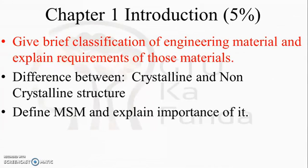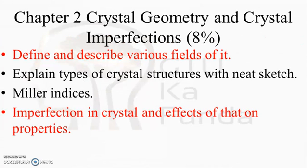Moving to the second chapter, Crystal Geometry and Crystal Imperfection, which contains eight percent of weightage. The important questions here are: define and describe various aspects of crystal geometry and crystal imperfection; explain the crystal structure with a neat sketch; Miller indices; imperfections in crystals and the effects on properties.